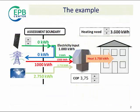The example is about a building which is heated by a heat pump which can be powered by the grid or by on-site PV panels. As defined in the video about primary energy, here we can see the heating needs, the heat pump output which is higher due to technical system losses, and all the components of delivered and exported energy. We will start from the condition where the heat pump is entirely powered by the grid and there is no contribution by PV panels.